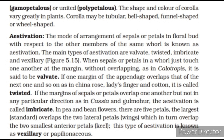Aestivation. The mode of arrangement of sepals or petals in a floral bud with respect to the other members of the same whorl is known as aestivation. The main types are valvate, twisted, imbricate and vexillary. When sepals or petals in a whorl just touch one another at the margin without overlapping, as in Calotropis, it is said to be valvate. If one margin of the appendage overlaps that of the next one and so on, as in China rose, lady's finger and cotton, it is called twisted. If the margins of sepals or petals overlap one another but not in any particular direction, as in cassia and gulmohar, the aestivation is called imbricate. In pea and bean flowers, there are five petals — the largest (standard) overlaps the two lateral petals (wings), which in turn overlap the two smallest anterior petals (keel). This type of aestivation is known as vexillary or papilionaceous.